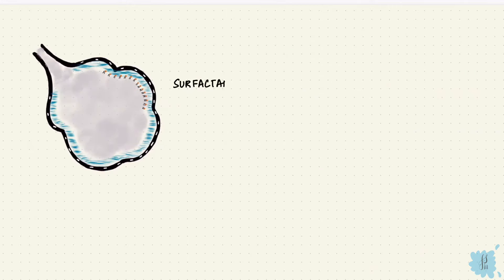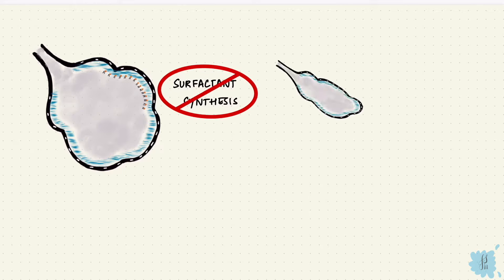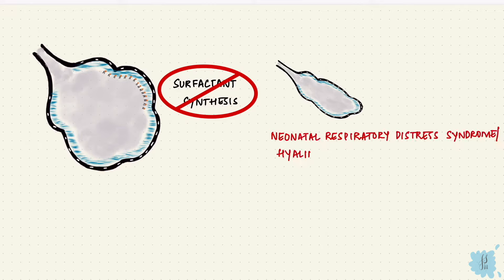Now remember I said it has to be synthesized, so what happens if it's deficient? Alveoli have more tendency to collapse. That's respiratory distress, and it's called neonatal respiratory distress syndrome, or hyaline membrane disease.